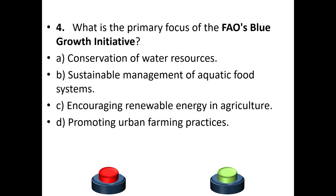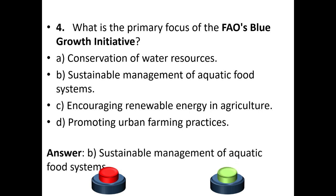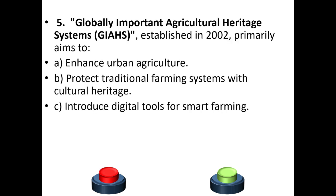Question 4: What is the primary focus of the FAO's Blue Growth initiative? a) Conservation of water resources, b) sustainable management of aquatic food systems, c) encouraging renewable energy in agriculture, or d) promoting urban farming practices. The answer is option B — sustainable management of aquatic food systems.